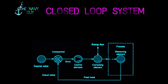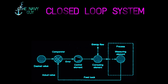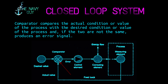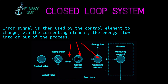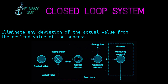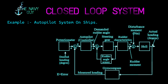In a closed loop control system, a sensing or measuring element is situated inside the feedback loop. The measuring element detects what is happening within the process and produces a feedback signal to a comparator, which reflects the actual value of the process. The comparator compares the actual condition with the desired condition, and if the two are not the same, produces an error signal. The error signal is then used by the control element to change, via the correcting element, the energy flow into or out of the process. This continuously attempts to eliminate any deviation of the actual value from the desired value. This system is potentially stable and very accurate. An example of a closed loop control system is the autopilot system on ships.